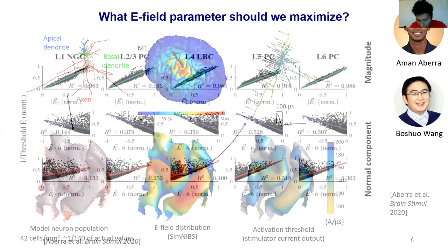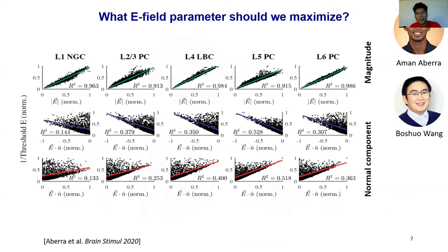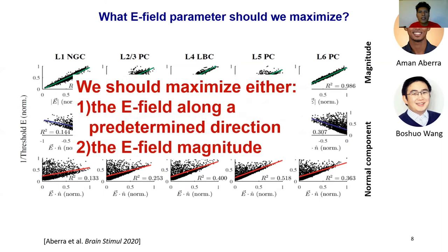Macroscopically, over the whole neuron population, the activation threshold was best correlated with the electric field magnitude. This indicates that we should maximize the electric field magnitude in the targeted cortical region of interest. They also found that different neuron types have preferential directions resulting in lower activation thresholds, so in some instances where specific neural populations are targeted, the electric field along a given direction should be maximized.